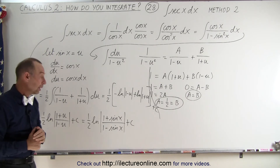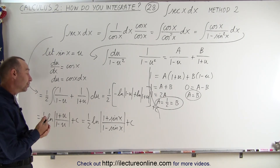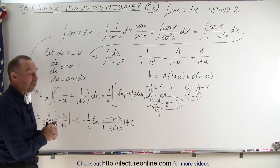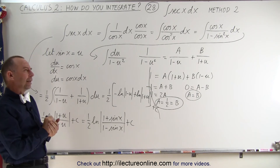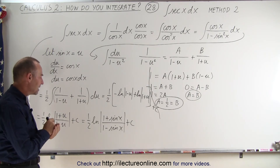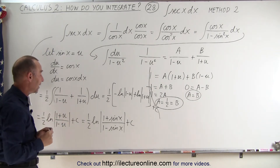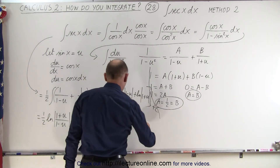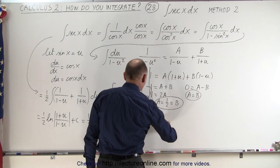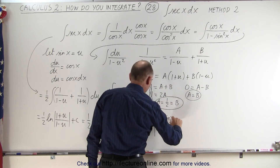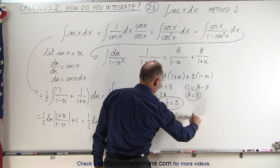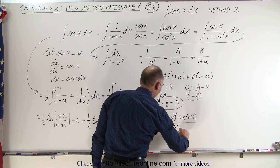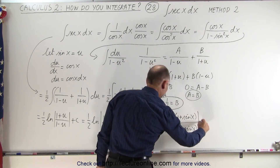We could leave it like this, but there's probably something else we can do. The reason is that in the previous video we got a different-looking answer. I believe we ended up with 1/2 times the natural log of the secant of x plus the tangent of x. So let's see if we can get the same answer. We're going to multiply the numerator and the denominator by the conjugate of the denominator. This becomes 1/2 times the natural log of (1 plus sine of x) times (1 plus sine of x) divided by (1 minus sine of x) times (1 plus sine of x), plus the constant of integration.